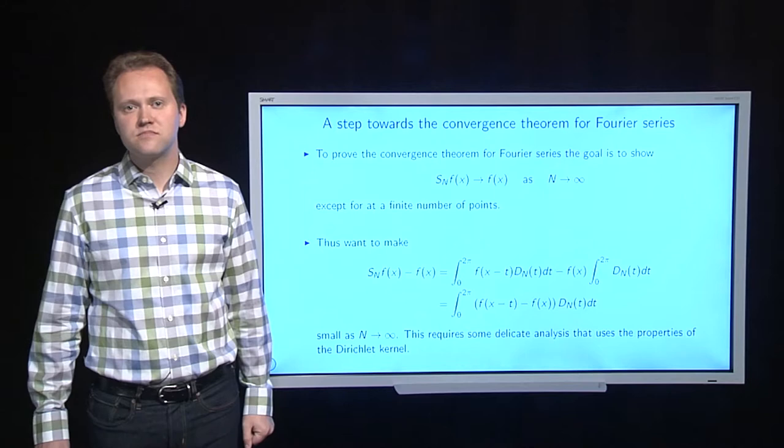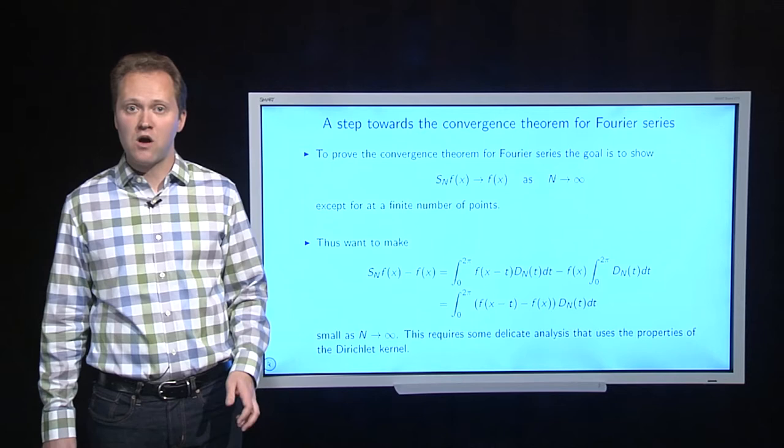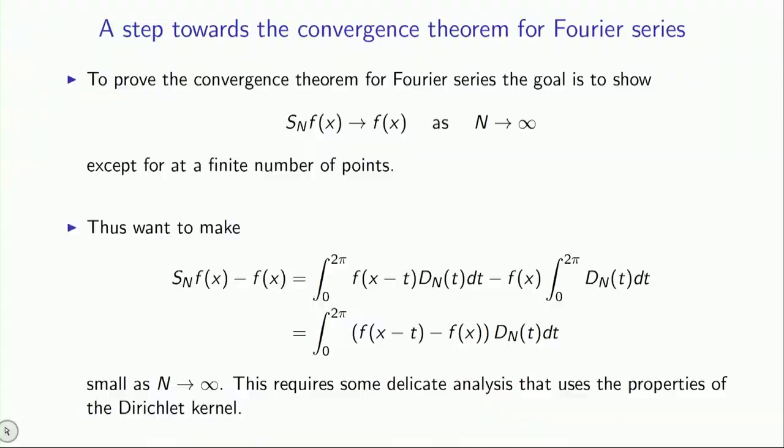Now, granted, there are jumps possible in your function. So let's just think about a point where your function f is nice and smooth. There are no jumps. And so what you want to show is that your partial sum for the Fourier series actually converges to your function at such a point. That is, as n goes to infinity, the partial sums should be converging to your function if it's not a point where a jump happened. In other words,